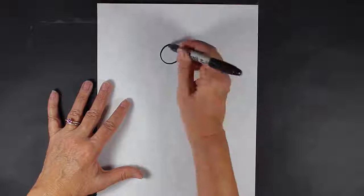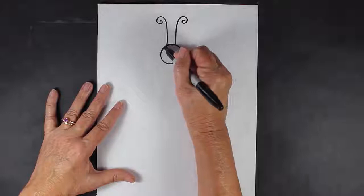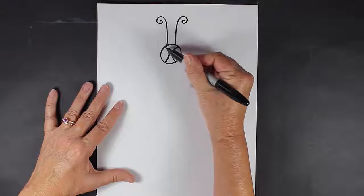Above that circle we're going to make two lines with little swirls at the end. Those are going to be our antenna. Then let's move down to our dragonfly's face and we're going to make two curved lines inside our circle.